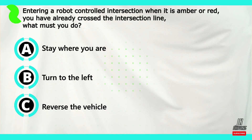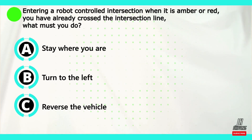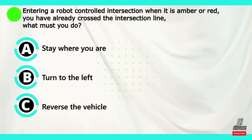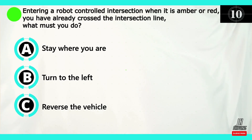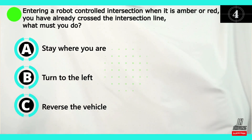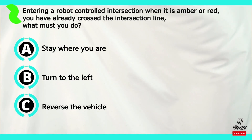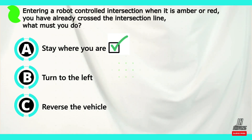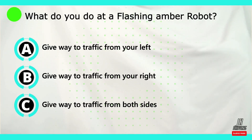Question number two: entering a robot-controlled intersection when it is amber or red, and you have already crossed the pedestrian crossing line, what must you do? Option A: stay where you are. Option B: turn to the left. Option C: reverse the vehicle. The correct answer is option A — stay where you are.